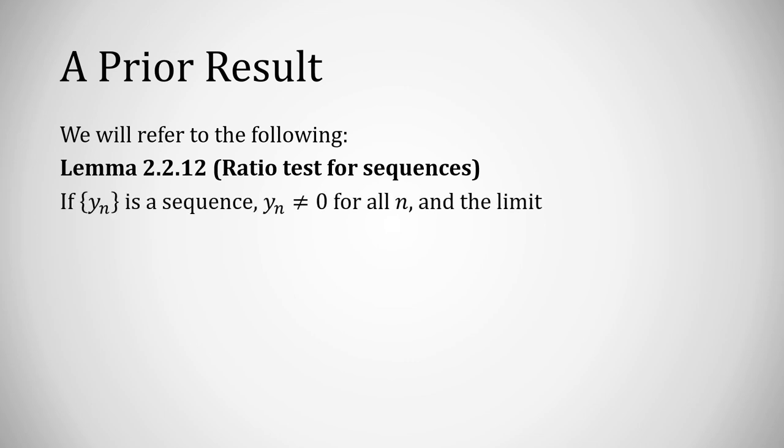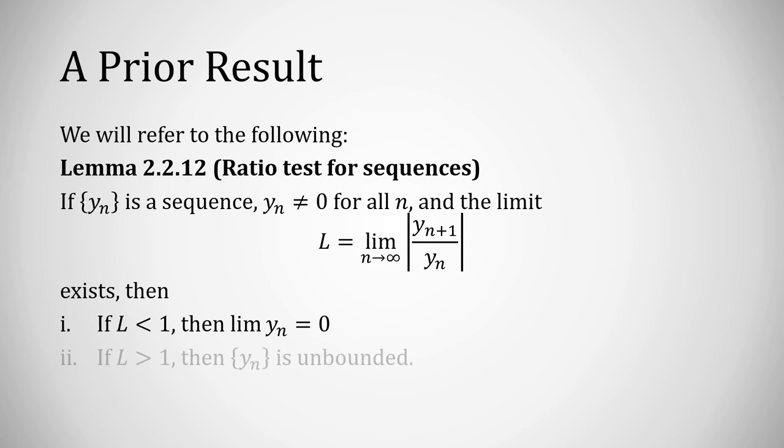Suppose you have a sequence yn which is never 0, and the limit of the absolute value of the ratio yn plus 1 over yn exists. If that limit is less than 1, then the original sequence, without any absolute values involved, must converge to 0.